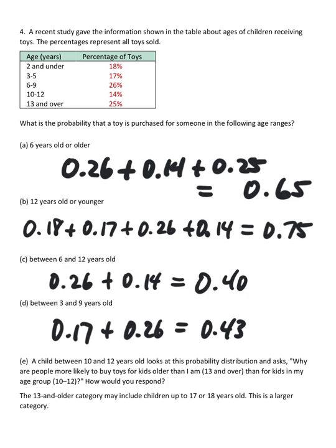Part E, a child between 10 and 12 years old looks at this probability distribution and asks, why are people more likely to buy toys for kids older than I am, which would be 13 and over, than for kids in my age group, 10 to 12? How would you respond? One possible answer would be that the category of 13 and older would include more children and up to 17 or 18 years old. And it's also a larger category, so it covers a lot more broad of a spectrum than just 10 to 12. You have a lot more age groups that can fall into this one.